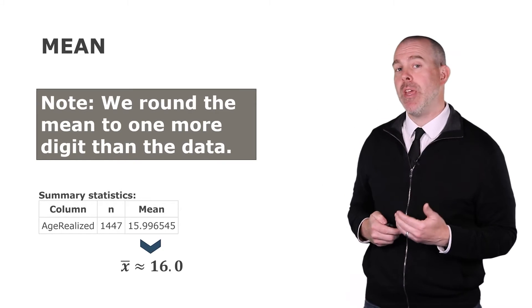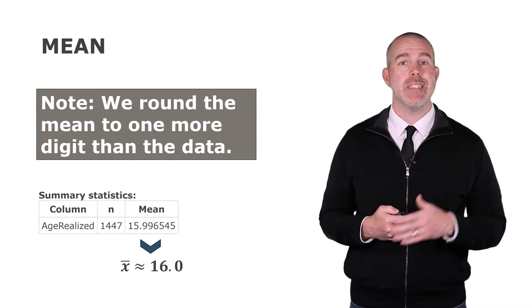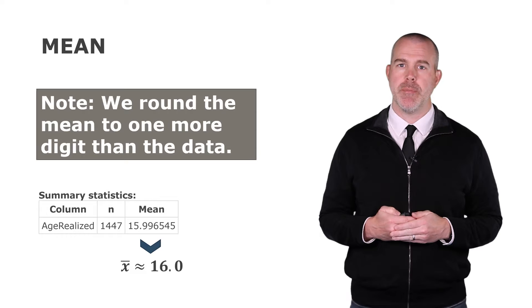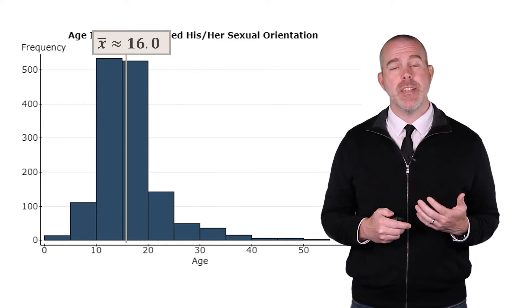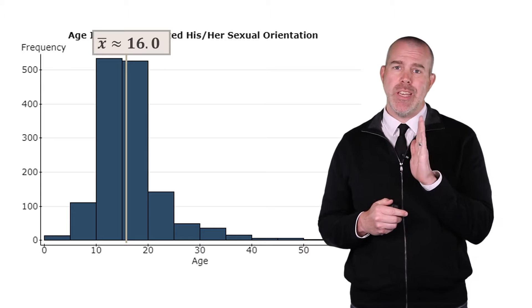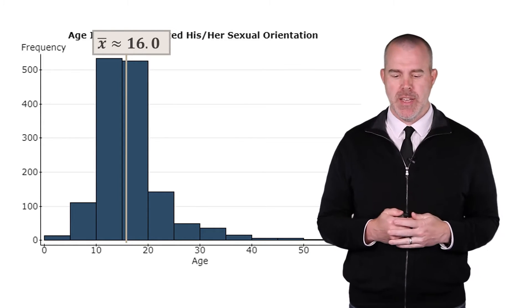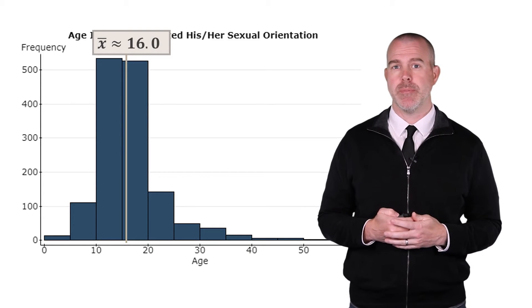We round to the tenths place. In this case, that would mean that the sample mean, x bar, would be about 16.0. One more digit than the original data. Now you can see that here I have a histogram, and that 16.0 is actually like the balance point. That's what the mean is. It's where it would balance. It's like the center of mass if you had physical objects here.